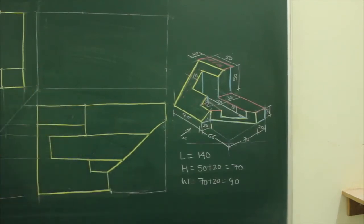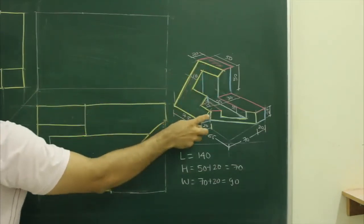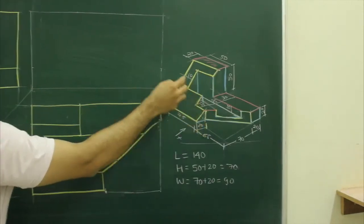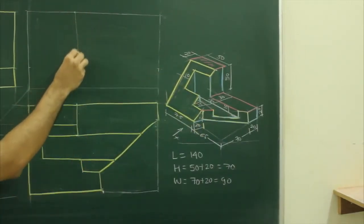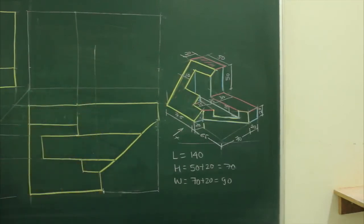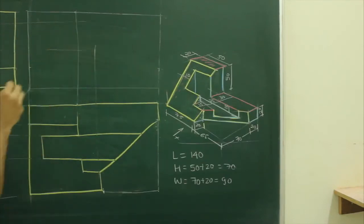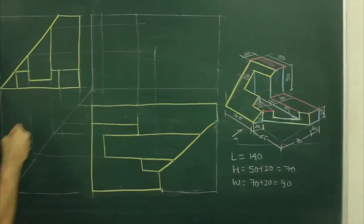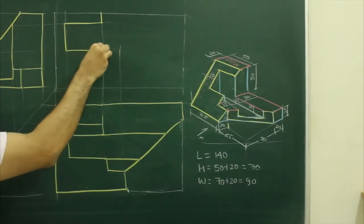Now when you see from the front, you will be able to see this portion, this inclined portion. So what we will do, we will project from top view. As well as, the remaining points, we will take from side view. So when you draw, you get this.